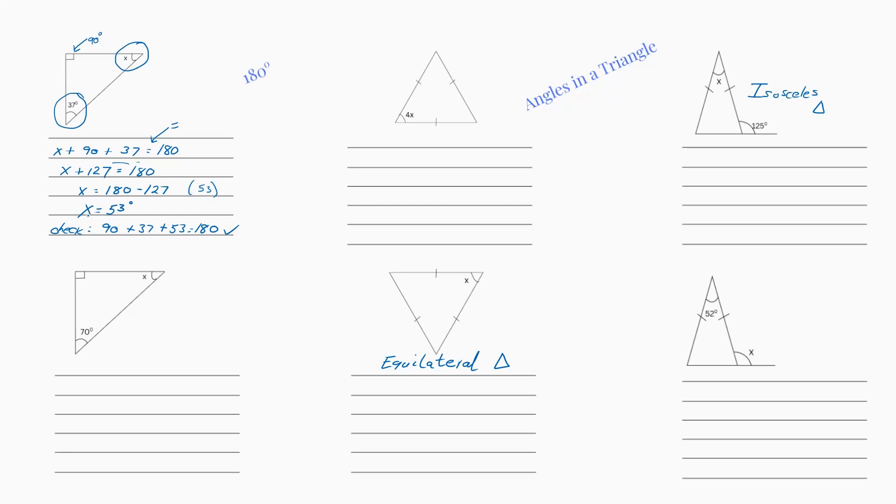And the good thing about these is we can check our answers because we know it's got to equal 180. So all I've done is I've added all my angles up including the 53 that we just did and it equals 180. So I'm very comfortable and confident that I've got that answer right. If for example it comes to 183, there's something wrong and you need to go back and check your angles.